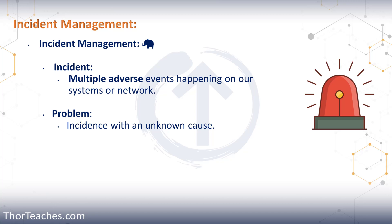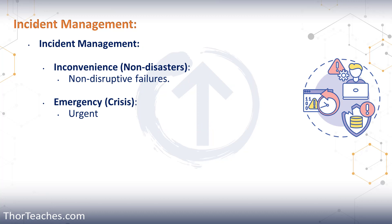Then we had an incident — that is when multiple adverse events happen on our systems or network. We had a problem, which is an incident with an unknown cause; we need to fix it, but we also need to understand how and why it happened. Then we had an inconvenience or non-disaster — things in our environment that are down or broken, but since we have redundancy, the end user will not notice. For example, a server with three disks in a RAID setup: if one disk fails, the other two are fine, but we obviously need to replace the failed disk as soon as we know, even though there's no negative impact on the end user.